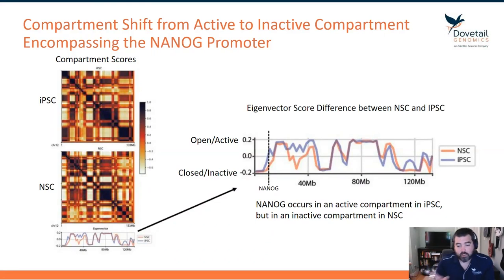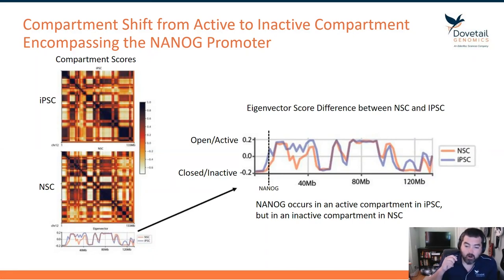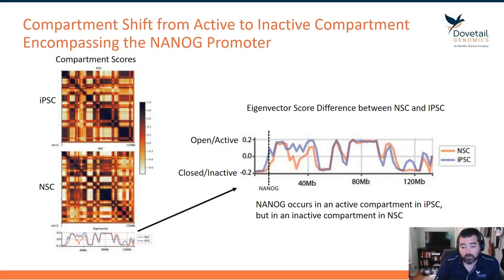As you go along chromosome 12, there are clear shifts between the NSC and iPSC cells — regions that are open in the iPSC cells and closed in the NSC cells and vice versa. Particularly, I want to point out NANOG, which is indicated by that dashed line early on chromosome 12.